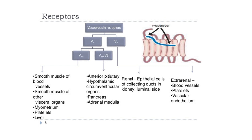Vasopressin acts through different receptor subtypes, broadly classified into V1 and V2 receptors. V1 receptors include V1a and V1b (or V3). V1a receptors are present in smooth muscles of blood vessels, visceral organs, myometrium, platelets, and liver. V1b/V3 receptors are present in the anterior pituitary, hypothalamic circumventricular organs, pancreas, and adrenal medulla. V2 receptors include renal receptors present on the luminal side of collecting duct epithelial cells, and extra-renal receptors present in blood vessels, platelets, and vascular endothelium.